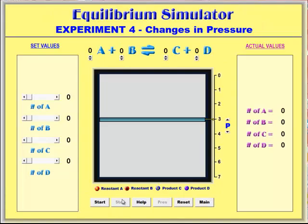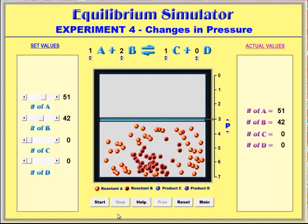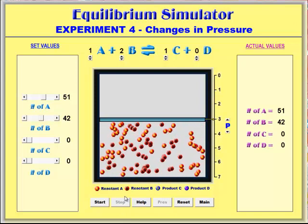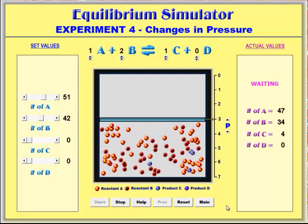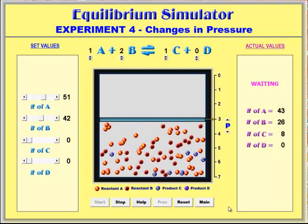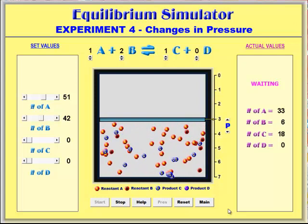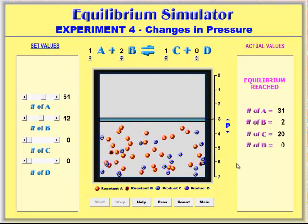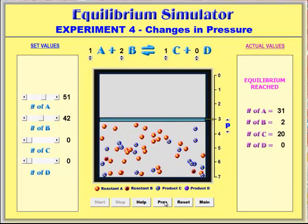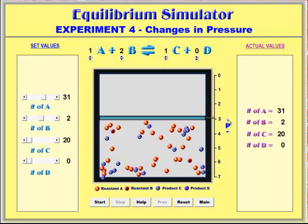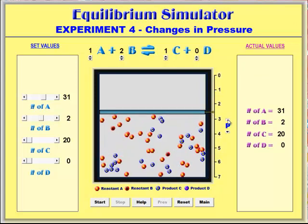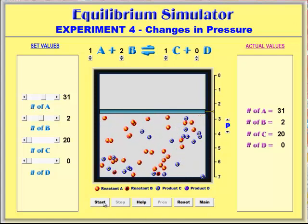We have experiment 4. Put in the same values. We'll start the reaction. Wait for it to reach equilibrium. And then we will change the pressure. So we're going to reduce the pressure. And then we're going to start the reaction again.